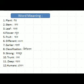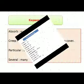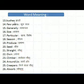Earlier means first. Classification means vargikaran. Strong means sashakt. Trunk means tana. Deep means gaherah. Human means insan, manusia. In this lesson there are word meanings.